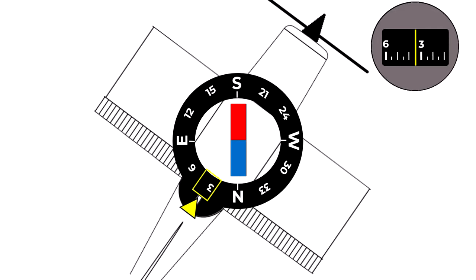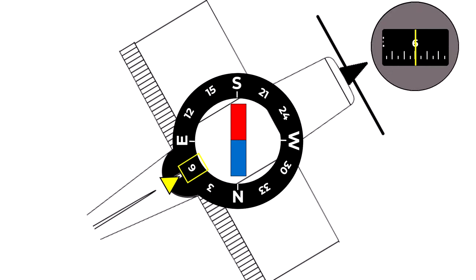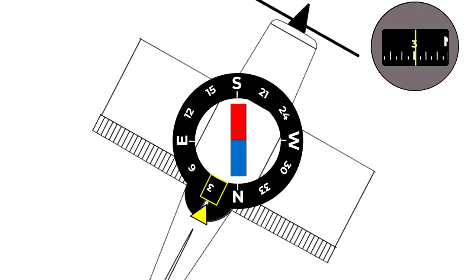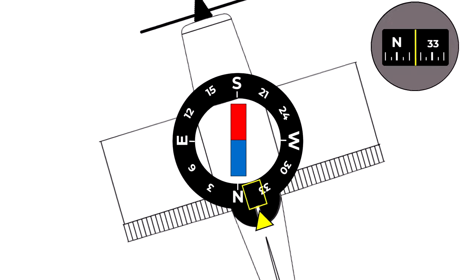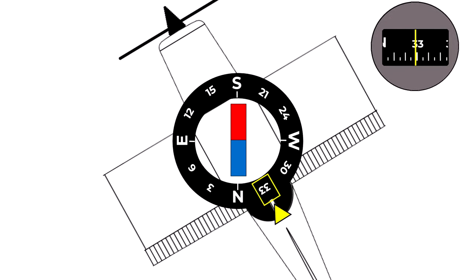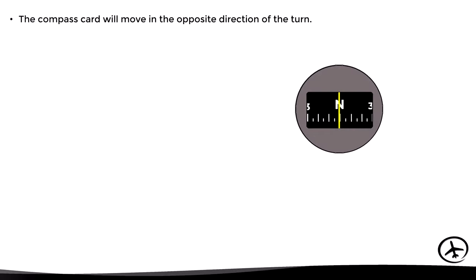Let's suppose we execute a right turn to heading 030 and as we can see it is correctly indicated in the compass. Here another right turn to heading 060, and here we do a left turn to heading 330. As we could see, with this design the heading indication is correct in all cases, however there is a little effect that has to be taken into account. It is that the compass card will move in the opposite direction of the turn.